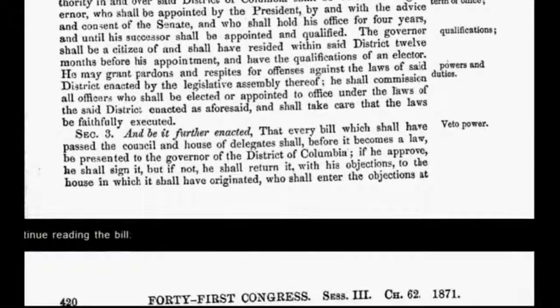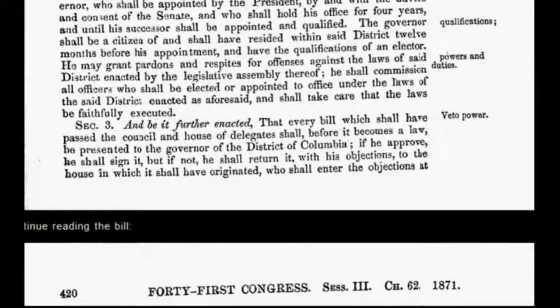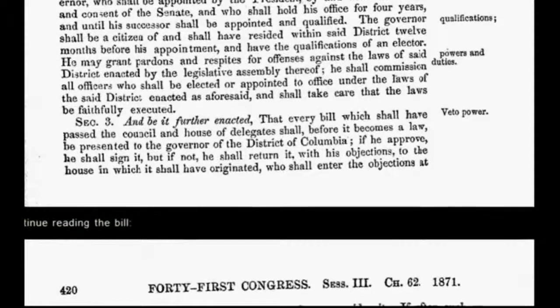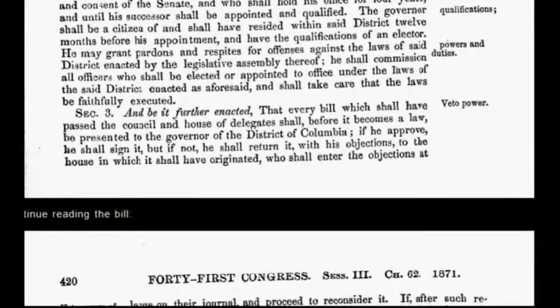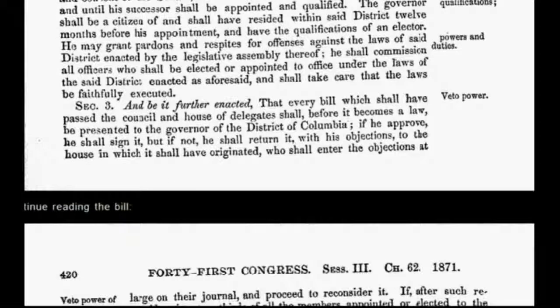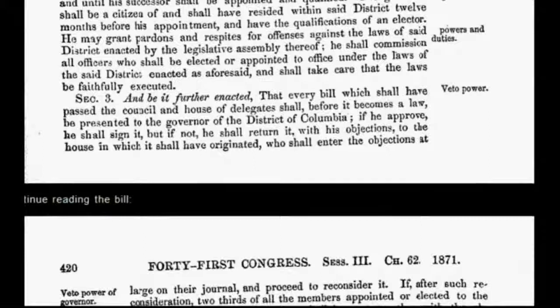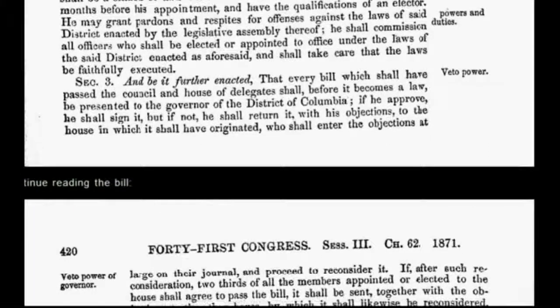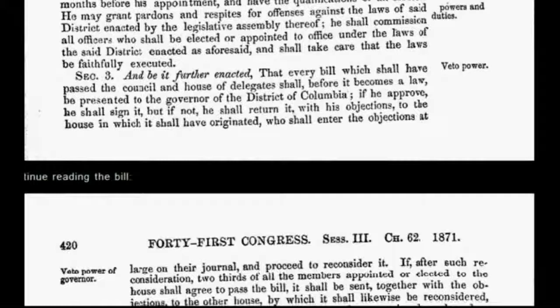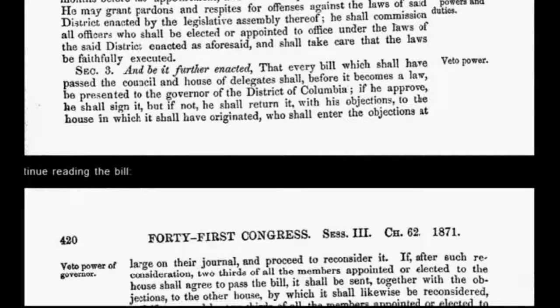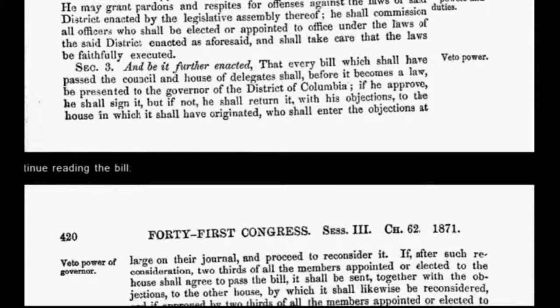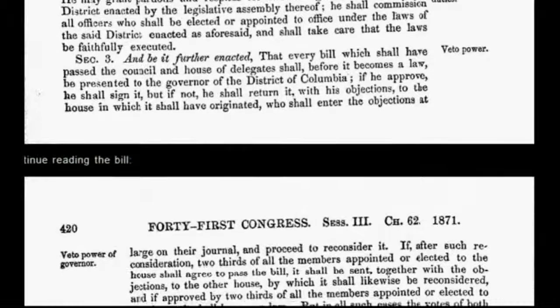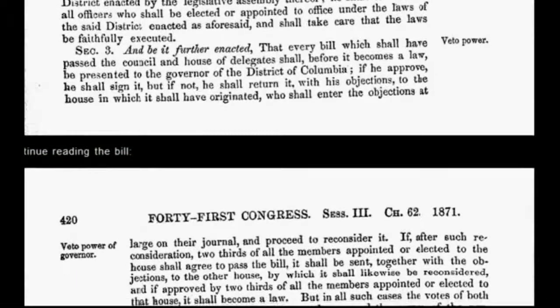What Congress did by passing the Act of 1871 was create an entirely new document — a constitution for the government of the District of Columbia, an incorporated government. This newly altered constitution was not intended to benefit the republic. It benefits only the corporation of the UNITED STATES OF AMERICA and operates entirely outside the original, organic constitution.